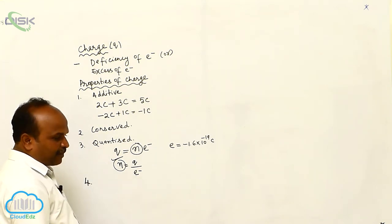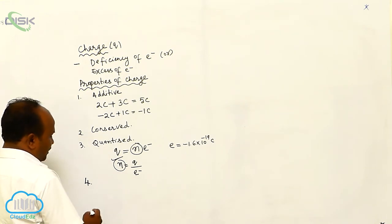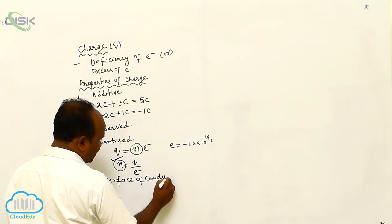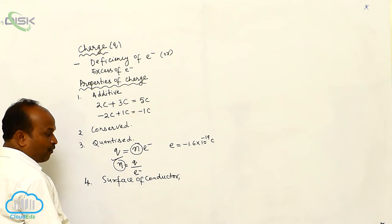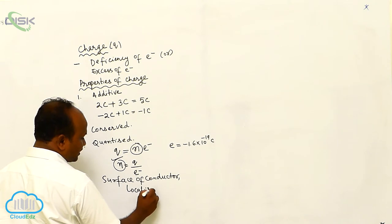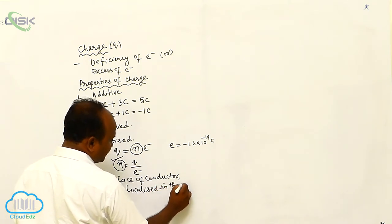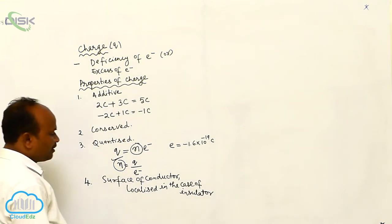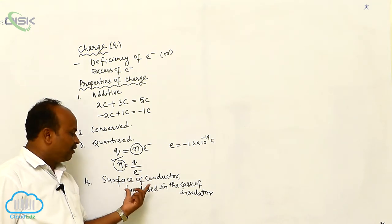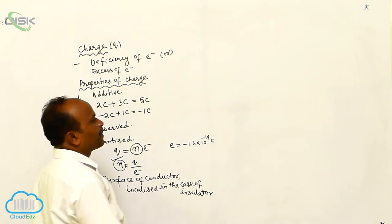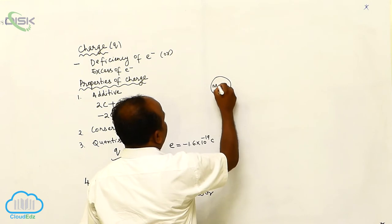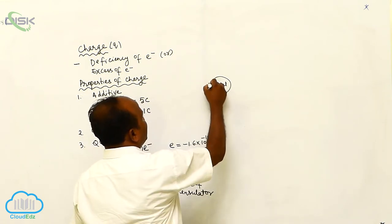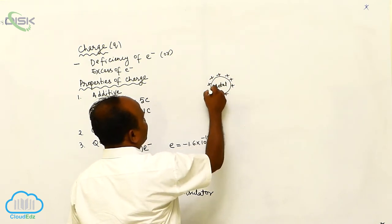The fourth property: the charge resides on the surface of the conductor, whereas it is localized in the case of an insulator. Suppose a metal ball is there — if you give charge at any point, it is totally distributed over the surface of the conductor.